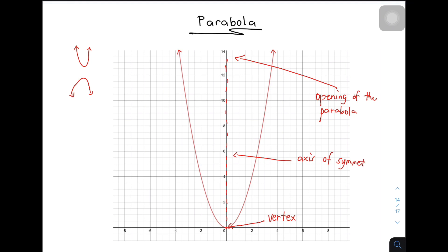Ano ba yung purpose ng axis of symmetry? Ito yung nag-divide sa parabola at ito yung nag-create ng mirror effect. Para ma-imagine nyo yung ibig sabihin, try to imagine yung dahon ng mga halaman — meron siyang line doon na nagpapakita ng symmetry ng dalawang bahagi ng isang leaf para magmukha siyang may mirror effect. Yun yung purpose ng axis of symmetry.